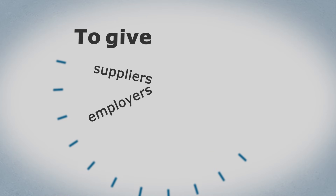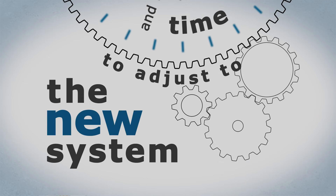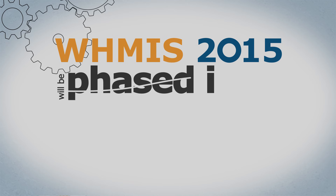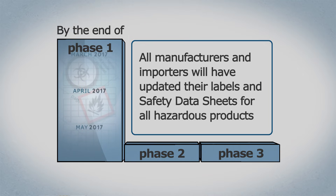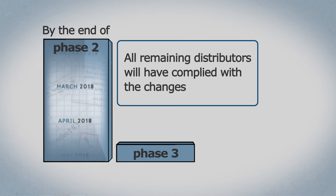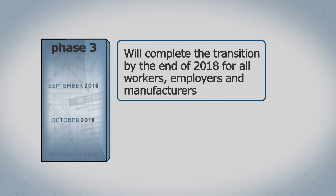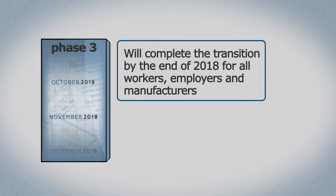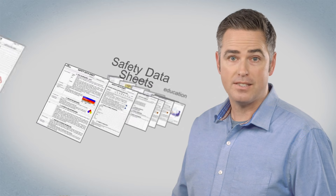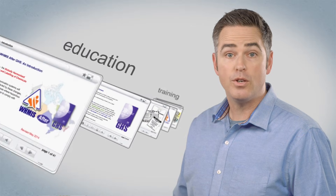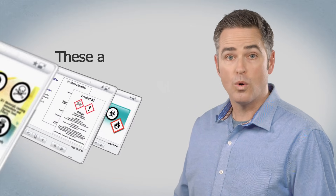To give suppliers, employers, and workers time to adjust to the new system, WHMIS 2015 will be phased in over three years. By the end of Phase 1, all manufacturers and importers will have updated their labels and safety data sheets for all hazardous products. By the end of Phase 2, all remaining distributors will have complied with the changes. Phase 3 will complete the transition by the end of 2018 for all workers, employers, and manufacturers. At this point, you need to make sure you have obtained the new labels and safety data sheets, and updated your worker education and training. These are your responsibilities.